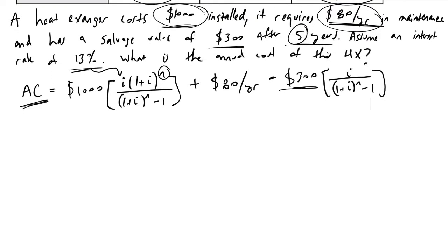And so as we continue to just plug in these values and just to spell it out, we have i equals 0.13, we have n is equal to five years, and it's really just a matter of algebra at this point but we will have 1000 times 0.284 plus 80 minus 300 times 0.154, and if we sum all these quantities up we will find that our annual cost is equivalent to three hundred and seventeen dollars per year.